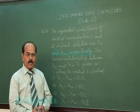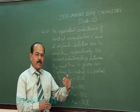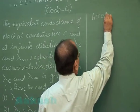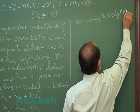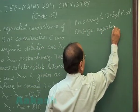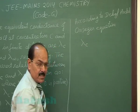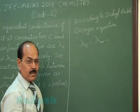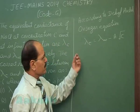According to Debye Huckel Onsager equation, the equivalent conductance of an electrolyte at concentration C is related to its equivalent conductance at infinite dilution and the concentration of the electrolyte by this relation. This is known as Debye Huckel Onsager equation.